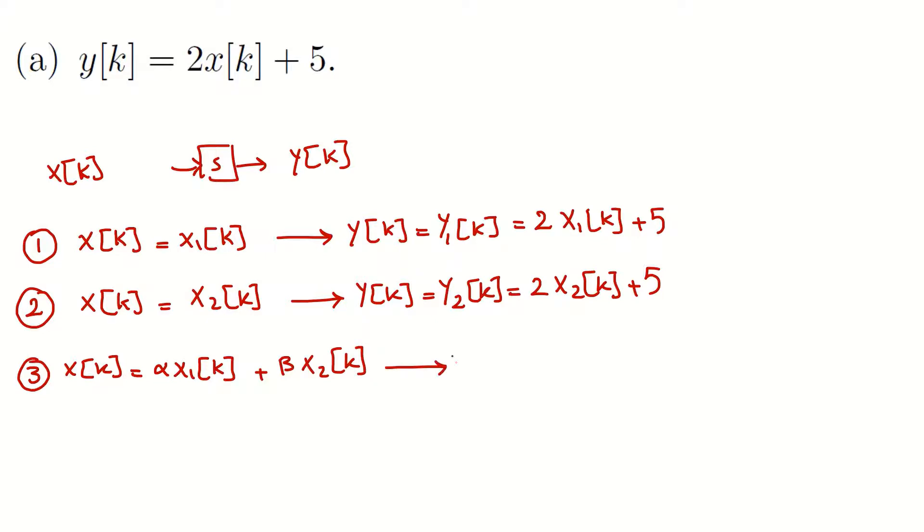Alright, so what would be the output? Based on the expression here, based on the relationship between input and output here, I can say that the output would be 2 times input. Well, this time this is the input to the system.